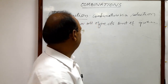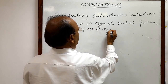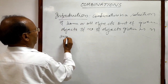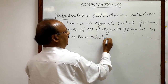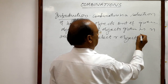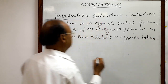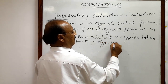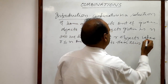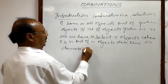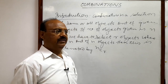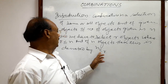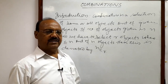If the total number of objects given is n, and we have to select r objects where r is less than or equal to n, then this selection out of n objects is denoted by nCr. Here n is the total number of objects and r is the number of objects we select, with r ≤ n.